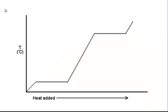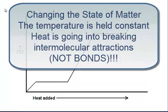Now, there's two things I really want you to get from this graph. The first thing is that whenever we have a change in the state of matter, the temperature is held constant. I'll say that again. Whenever we have a change in the state of matter, the temperature is held constant. There's still heat being added, though.